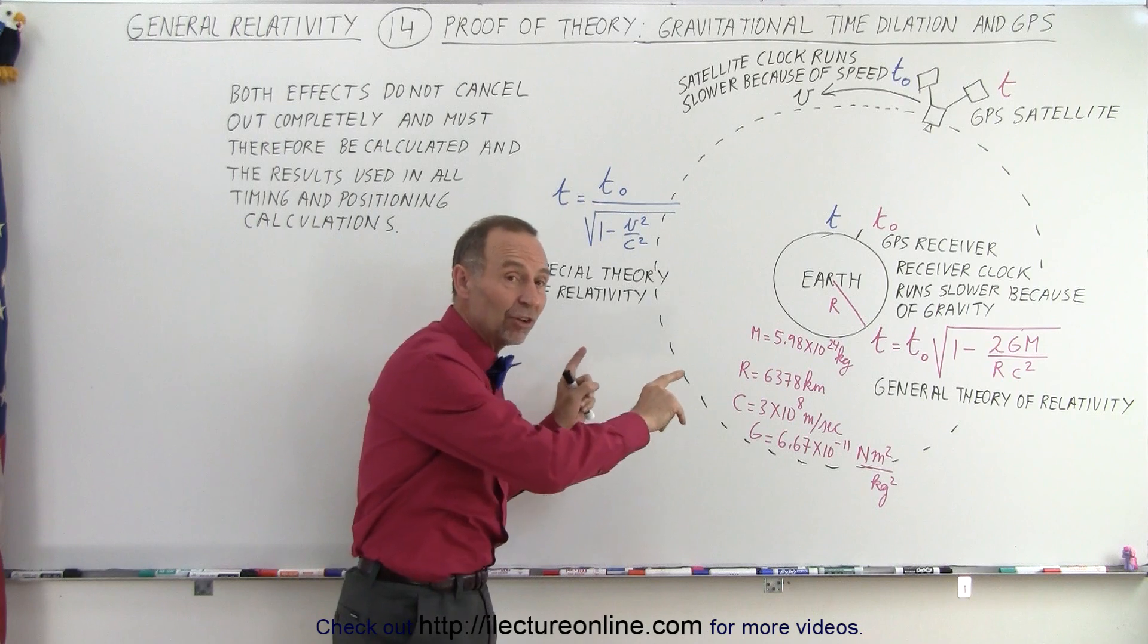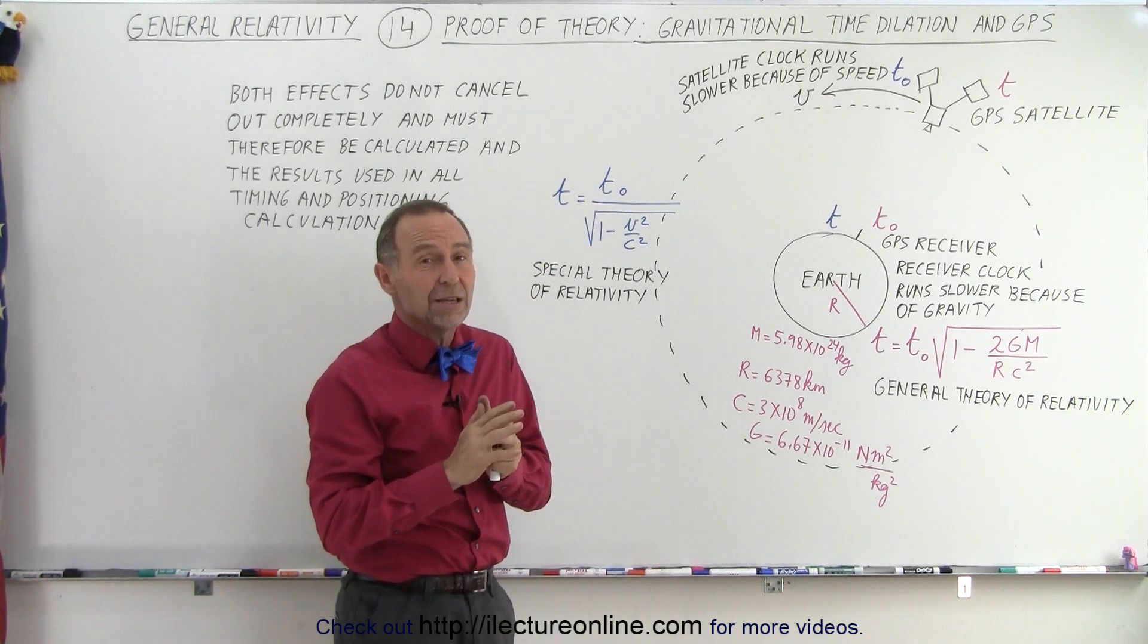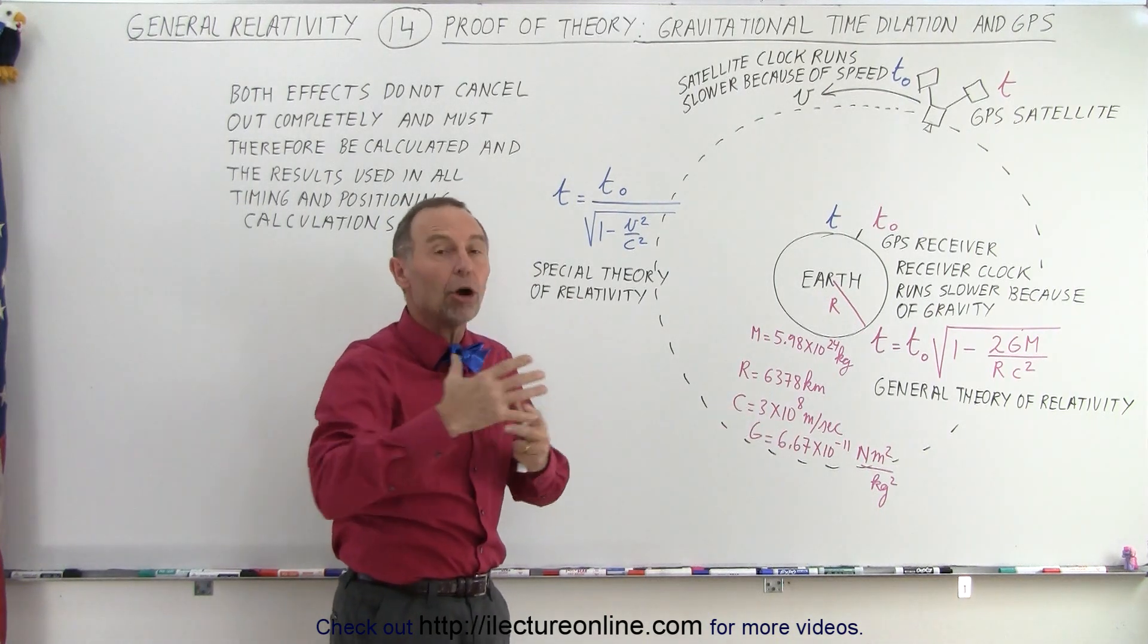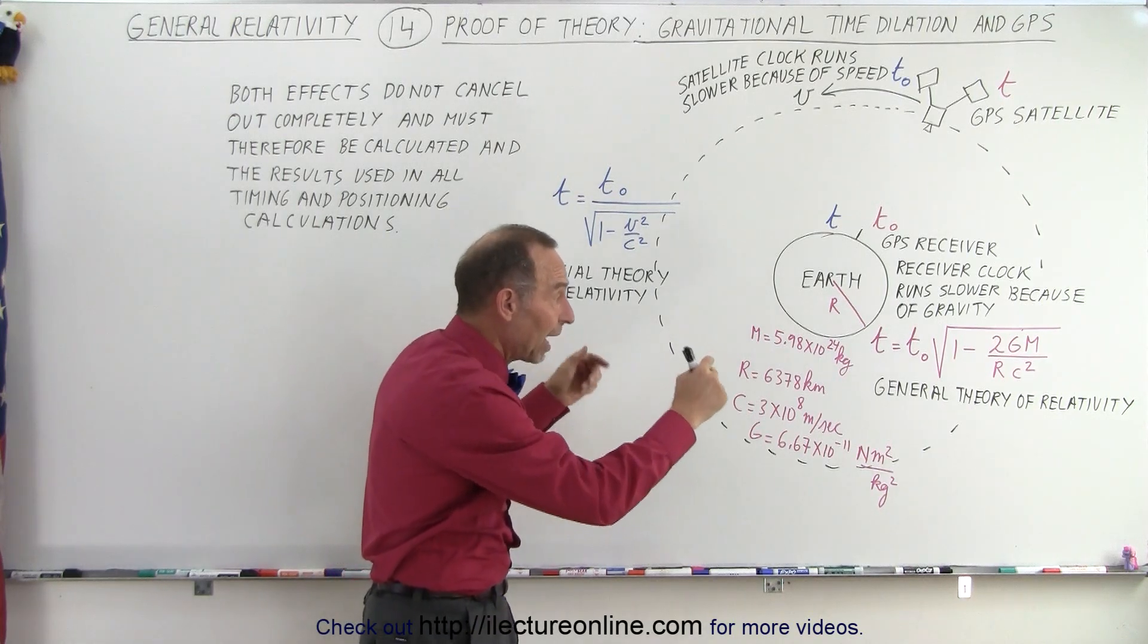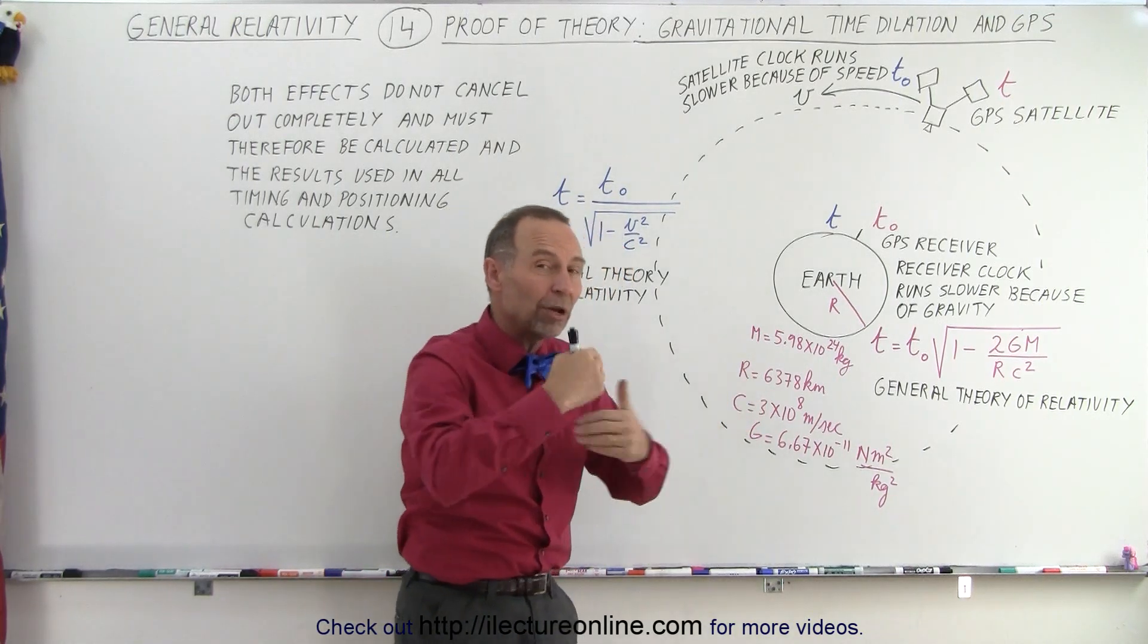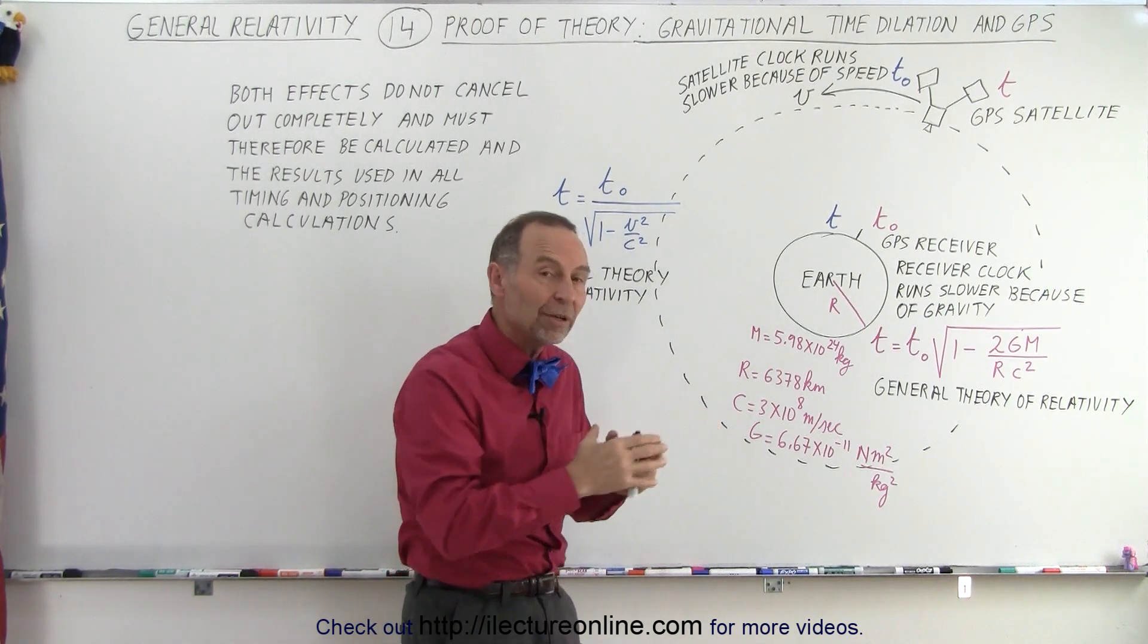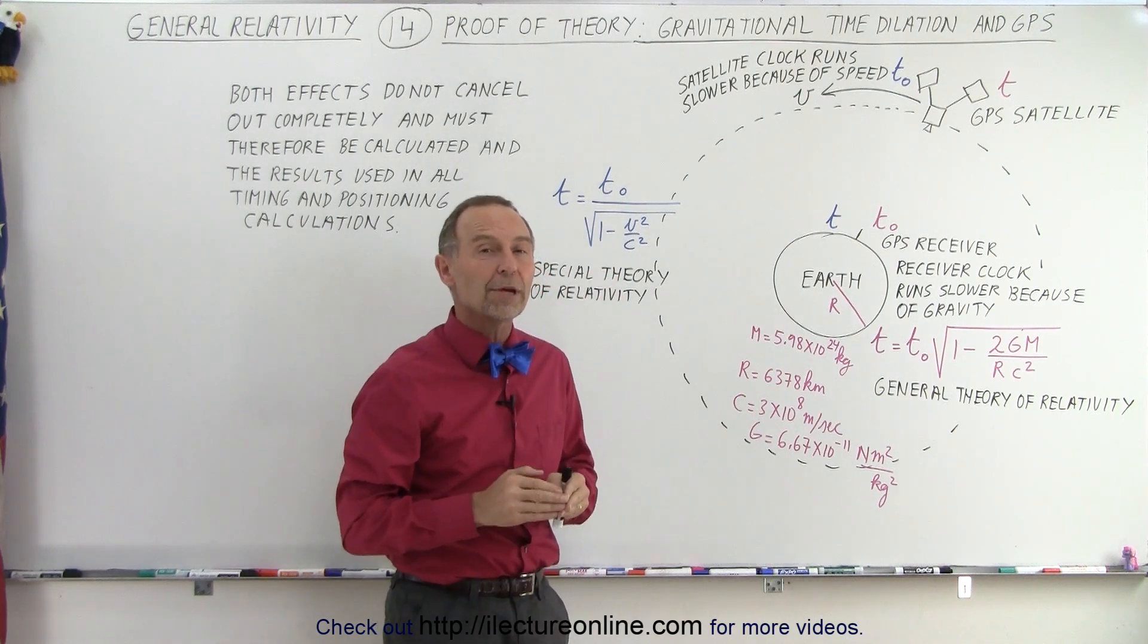So if we don't make the adjustments, the GPS receivers would not be good at all. We wouldn't know where we are. There would be large errors in the positioning of the receivers. But if we take the equations into account and we add that to the equations in the software, then all of a sudden the GPS receivers become very accurate and we can very accurately determine where we are.